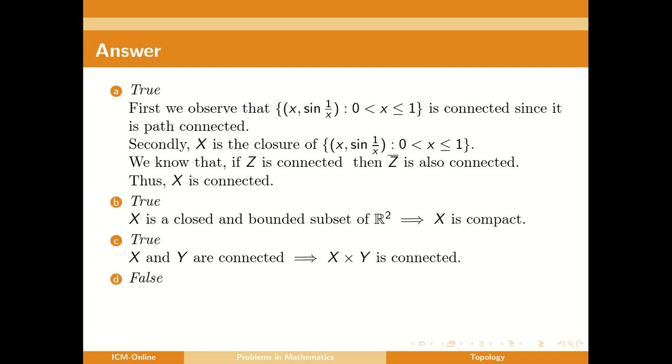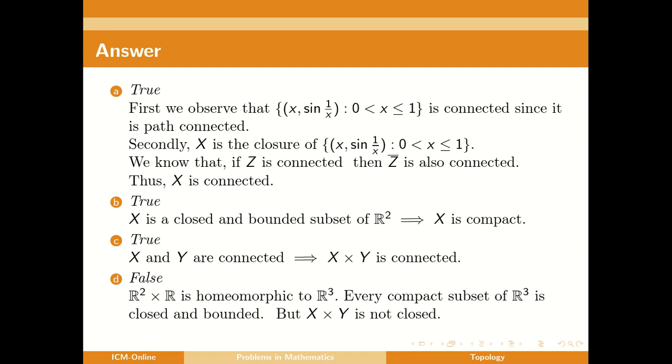Now option D is false. R² × R is homeomorphic to R³. Every compact subset of R³ is closed and bounded, actually it is the characterization of compactness in any Euclidean space. But X × Y is not closed, since Y is not closed in R. So X × Y is not compact.